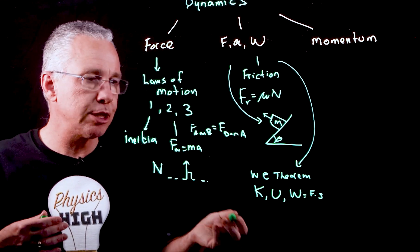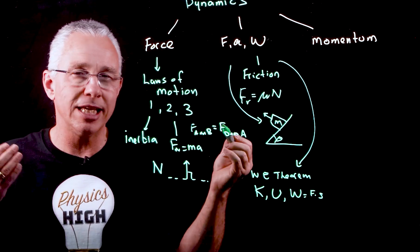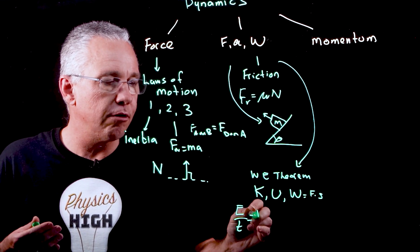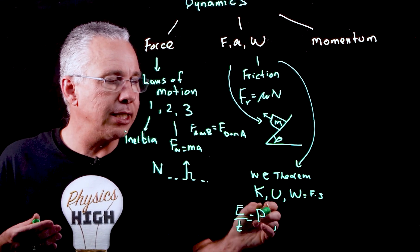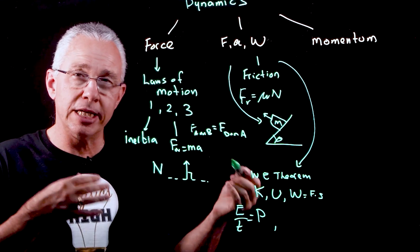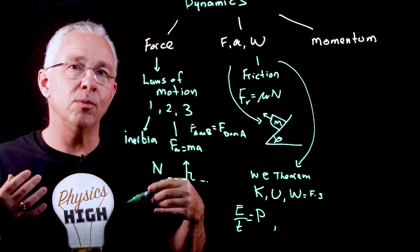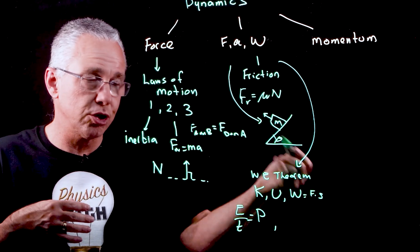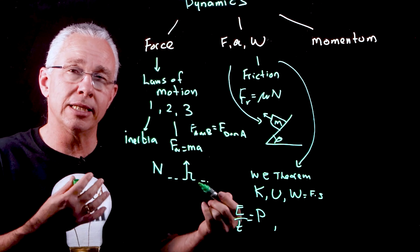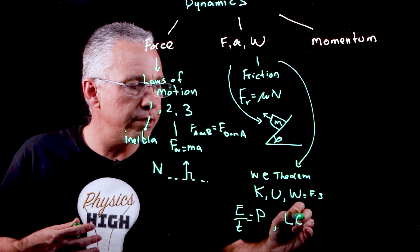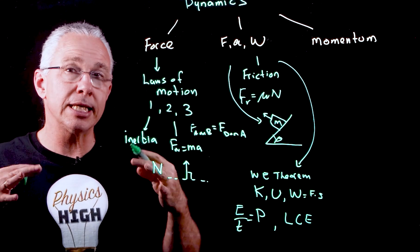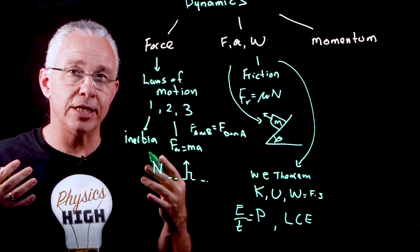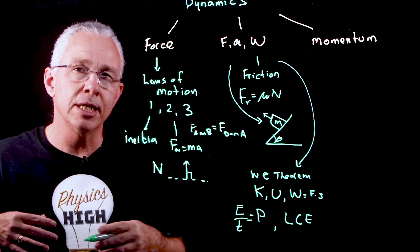And then finally, as a natural flow-on from that, we have two aspects. Well, what if we are interested in the rate at which we do this? And so we have the idea of power. And then finally, if we have an object changing energy, then we have the energy coming from some other source, such as the work done. And so what we end up having is the concept of the law of conservation of energy.